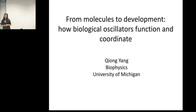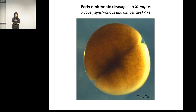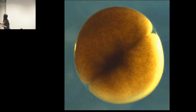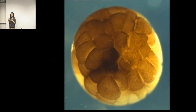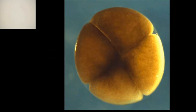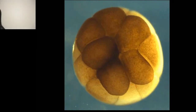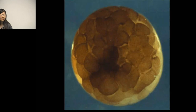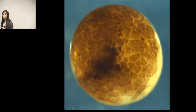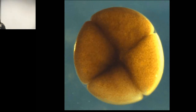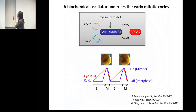I want to start by showing you an example of what is a biological oscillator and how it functions. This is a huge embryo from Xenopus and it's so huge that you can see it with your naked eyes. After fertilization, you see that this huge embryo will quickly be chopped into small pieces of cells in a highly synchronous and clock-like manner. We know now that there is a biological clock that controls these processes.